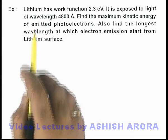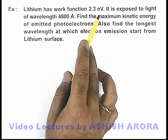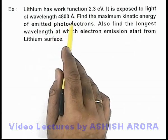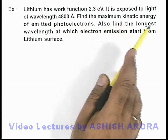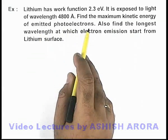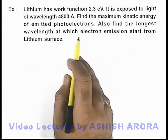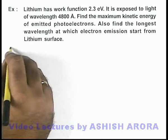In this example, we are given that lithium has a work function of 2.3 electron volts and it is exposed to light of wavelength 4800 angstroms. Here we are required to find the maximum kinetic energy of emitted photoelectrons and the longest wavelength at which electron emission starts from the lithium surface.